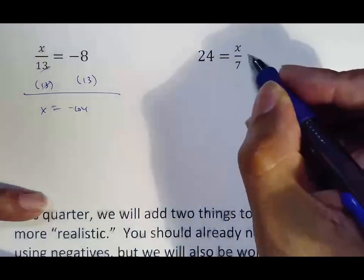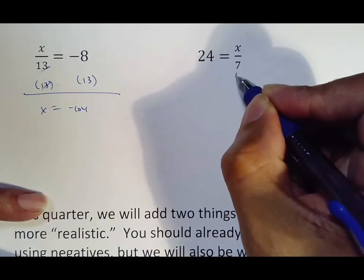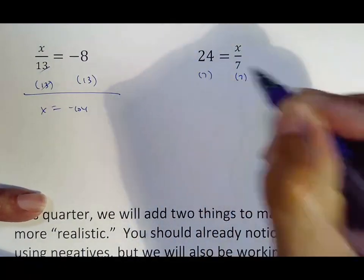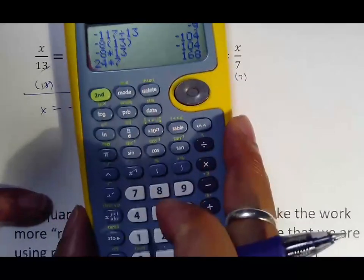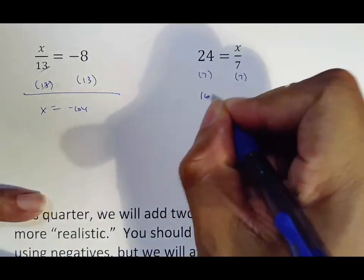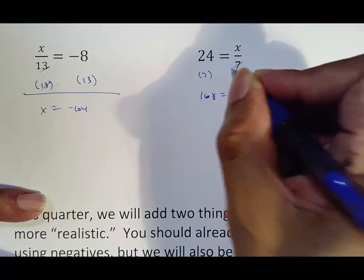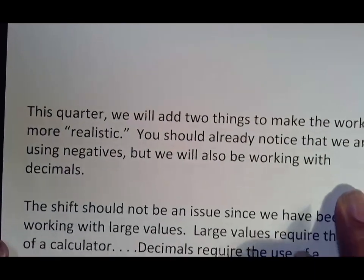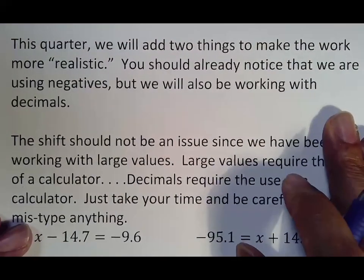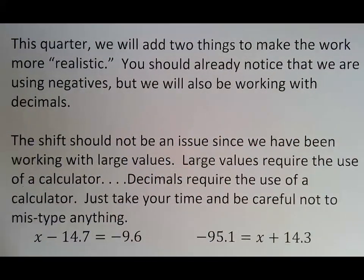24 equals X over 7. That's X divided by 7. So we multiply by 7 to move it. 24 times 7 is 168. The 7s go away, giving us just X. So that is what we did so far. This quarter, though, to make things more realistic, you already see that we're doing negatives. But we're also going to be dealing with decimals.